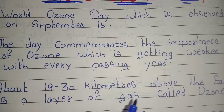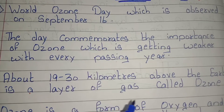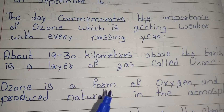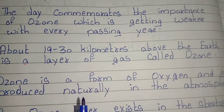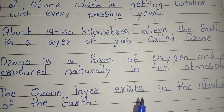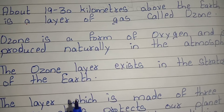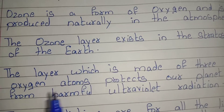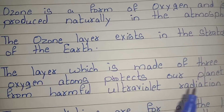About 19 to 30 km above the earth is a layer of gas called ozone. Ozone is a form of oxygen and is produced naturally in the atmosphere. The ozone layer exists in the stratosphere of the earth. The layer is made up of three oxygen atoms and protects our planet from harmful ultraviolet radiation.